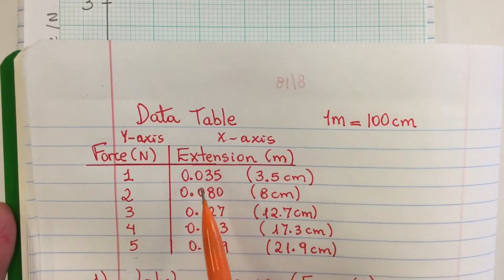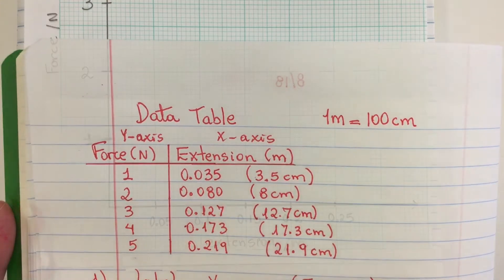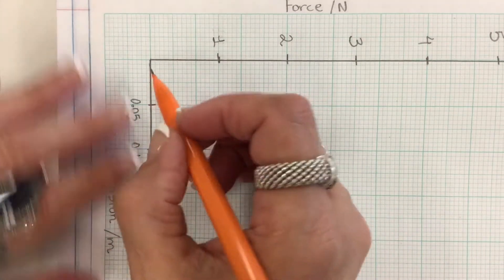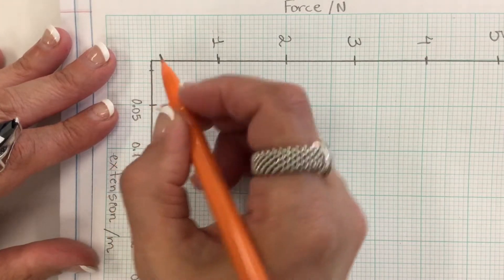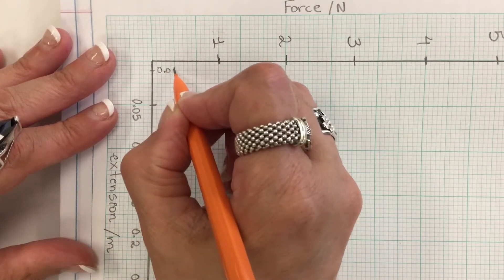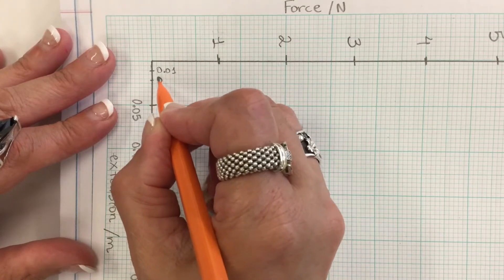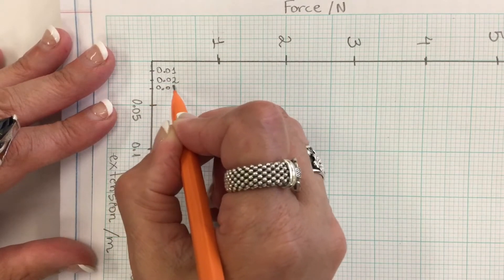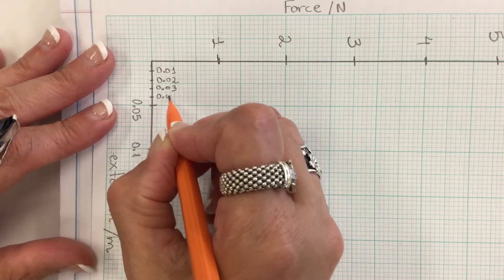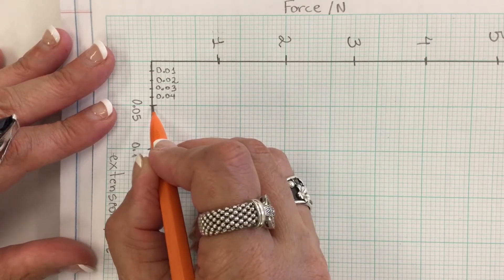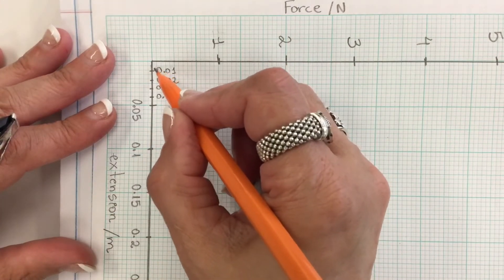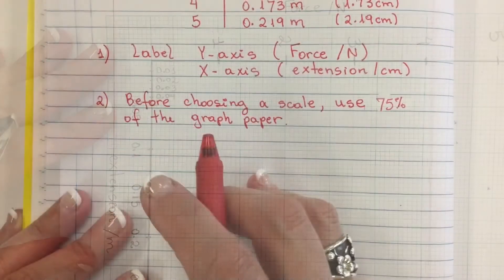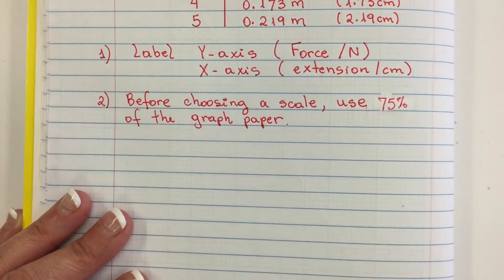So our first number here is 0.035. If this is 0.05, the first two little boxes is 0.01, then we have 0.02, this is right here 0.03, this is 0.04, and this is 0.05. So every two tiny boxes, my smallest increment is 0.01.